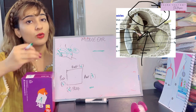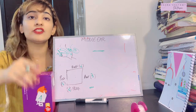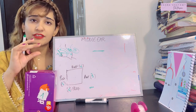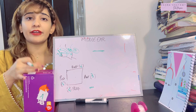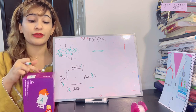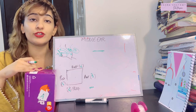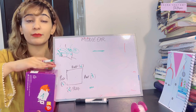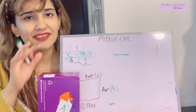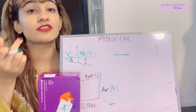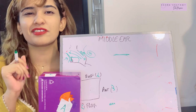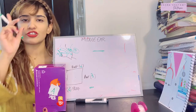In adults, the petrosquamous fissure is ossified — nothing leaks through it. But in children, this suture hasn't ossified, so any ear infection can easily enter the brain. The tegmen tympani is the only barrier between the middle ear and the brain. In adults, this fissure transmits a vein leading to the superior petrosal sinus.